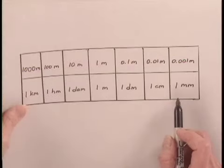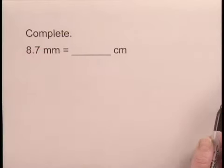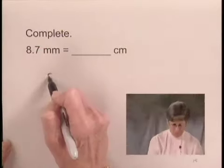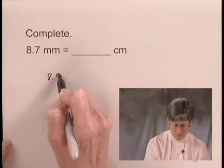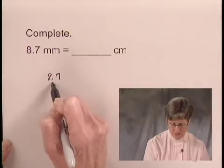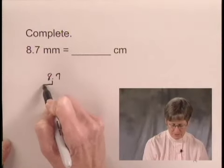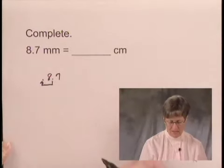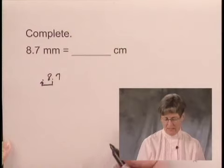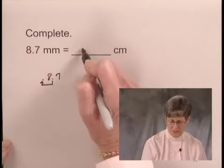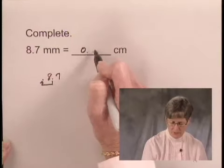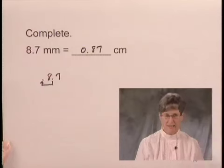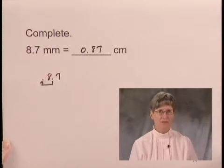So that tells us to take the number that we're converting and move the decimal point one place to the left, which would place it here in front of the 8. That tells us then that 8.7 millimeters is equal to 0.87 centimeters.